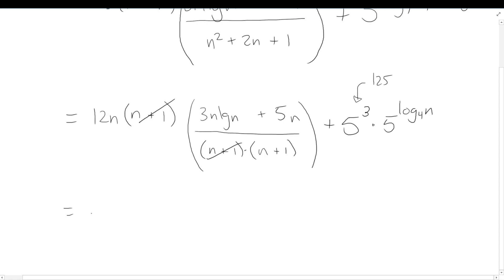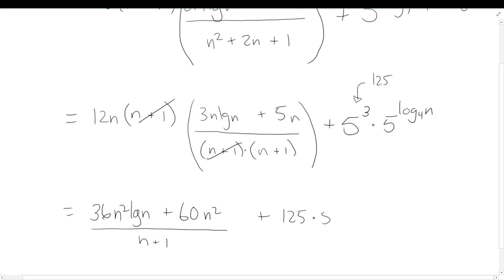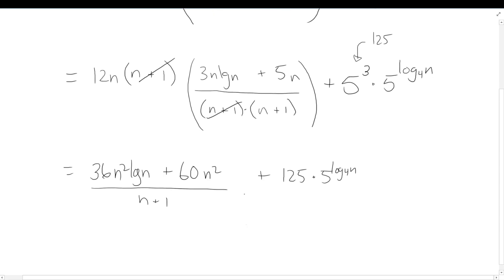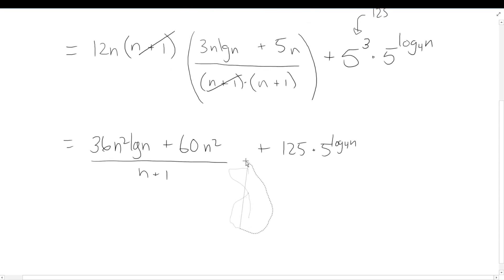Let me do the cancelling and multiply through. We get 12 times 3 = 36n² log n, plus 12 times 5 = 60n², all over (n+1), plus our 125 times 5^(log₄n) term. At this stage, it would be helpful to get rid of that n+1, and what I want to do next is simplify the 5^(log₄n) term a bit more.